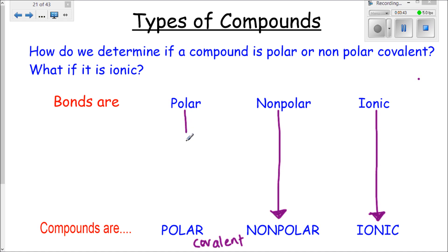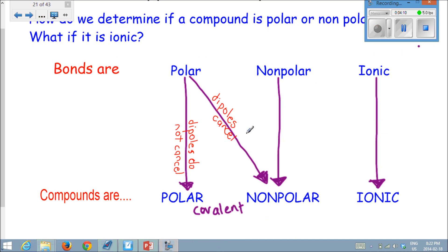If you have polar bonds, you're also going to be a polar molecule. And if you have polar bonds, you also can be a nonpolar molecule. So, this is the only one that's confusing. As soon as you have polar bonds, you can either be a polar molecule or a nonpolar molecule. The way that we determine it is if the dipoles cancel. If the dipoles cancel, then you are nonpolar. If the dipoles do not cancel, then you are polar.